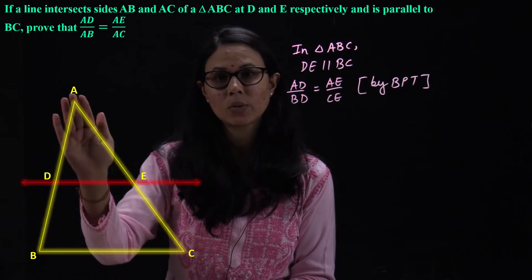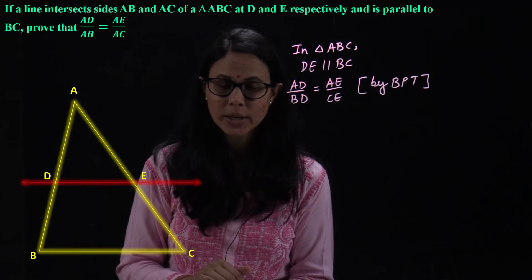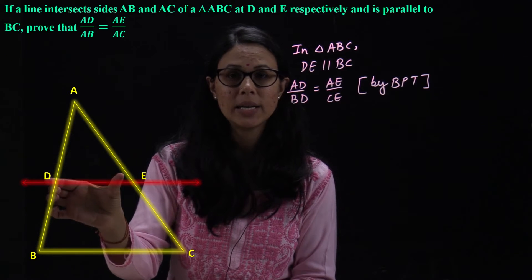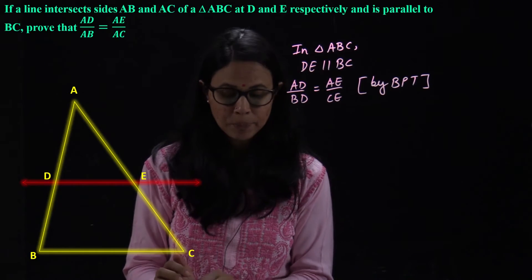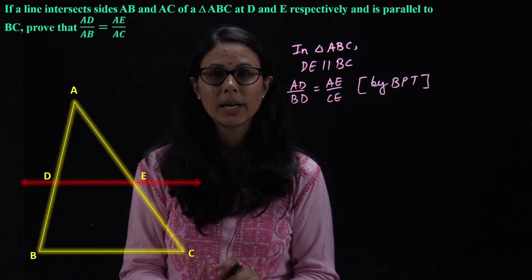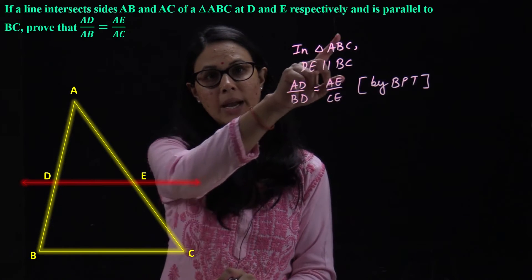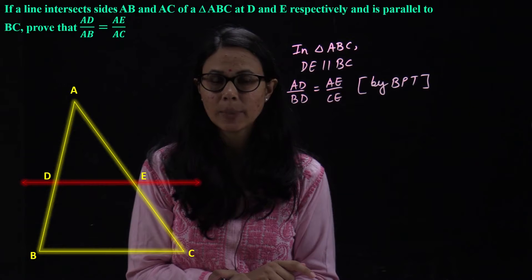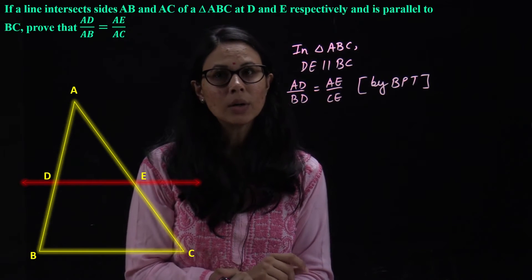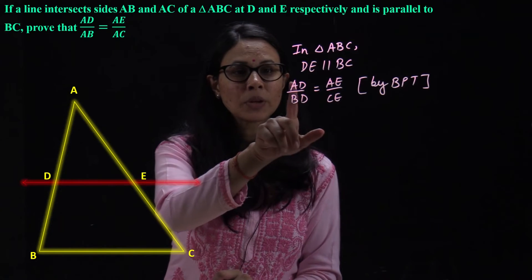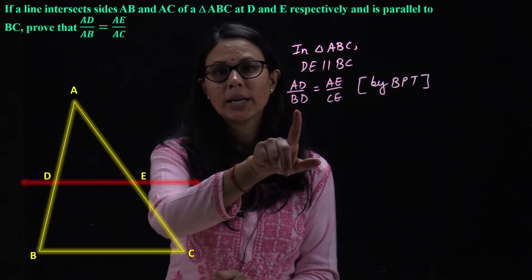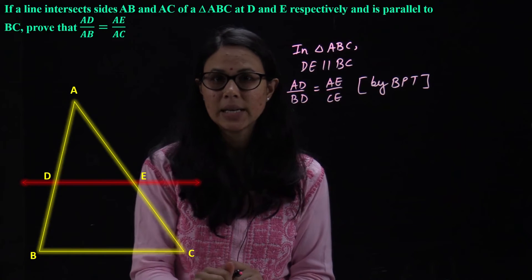Now, we have AD upon BD is equal to AE upon CE. If DE is parallel, here we have a condition. Now, what we need to prove, we need AD upon AB. Then, AD and AE. We don't need BD and CE. Right?